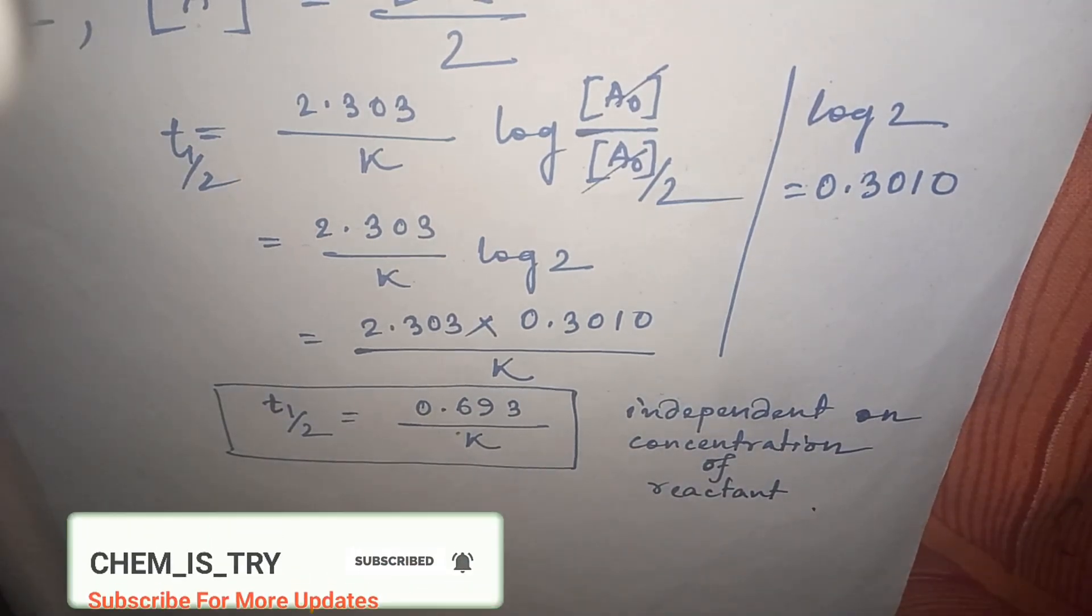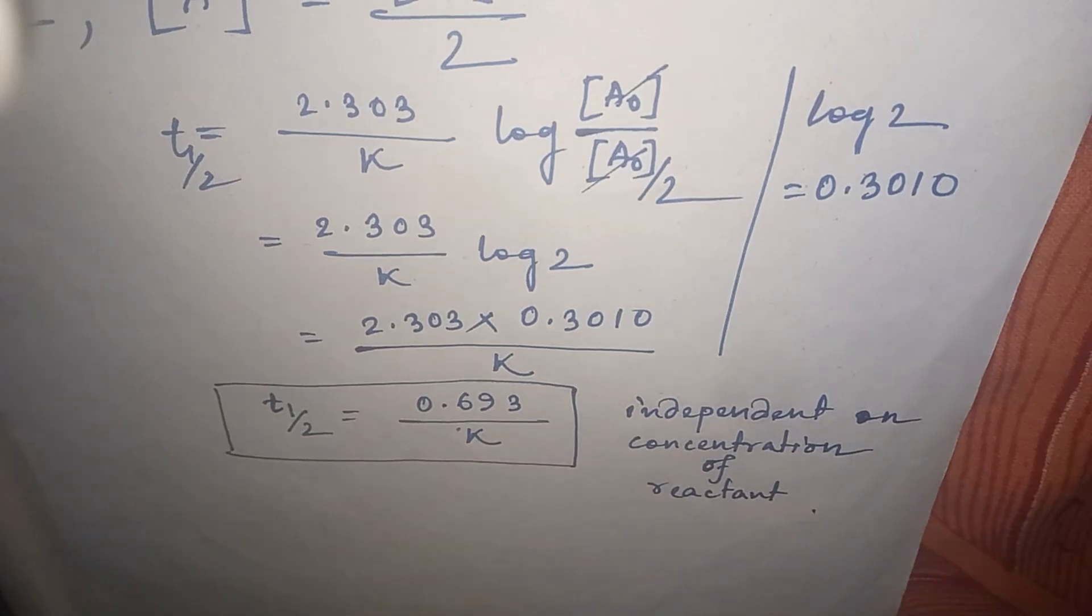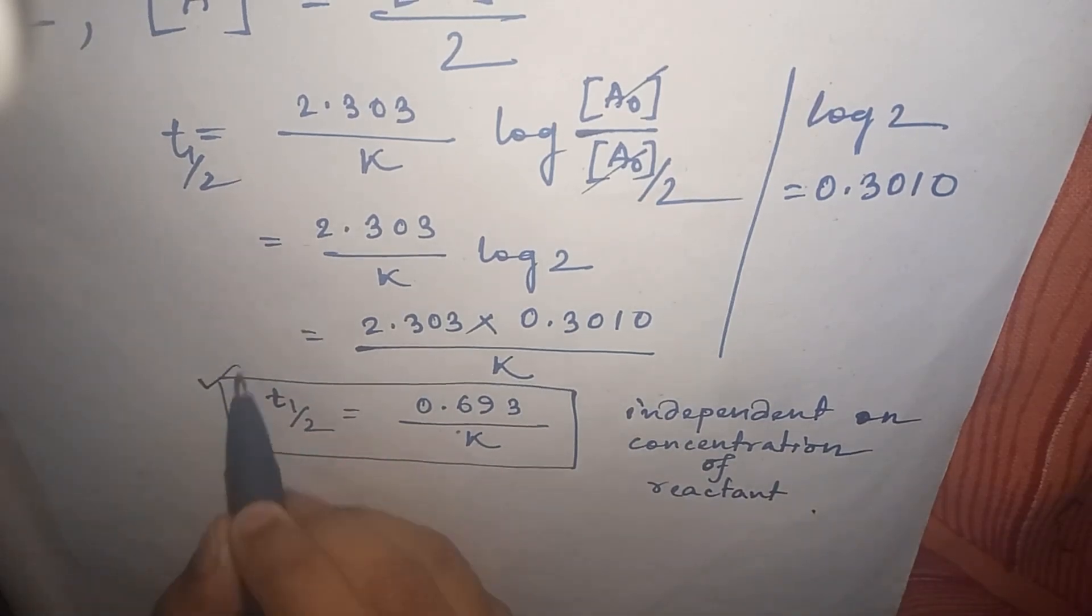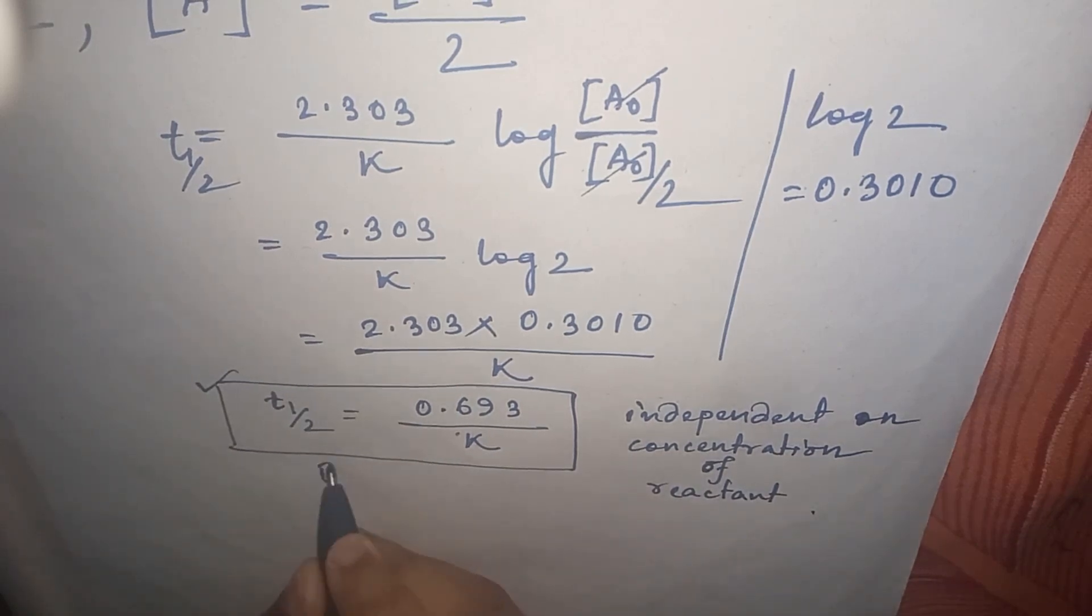Now if any question comes to find out the T half or half-life period of any first-order reaction given the value of rate constant, then you have to use this formula which is T half equal to 0.693 by K. This one is for first-order reaction.